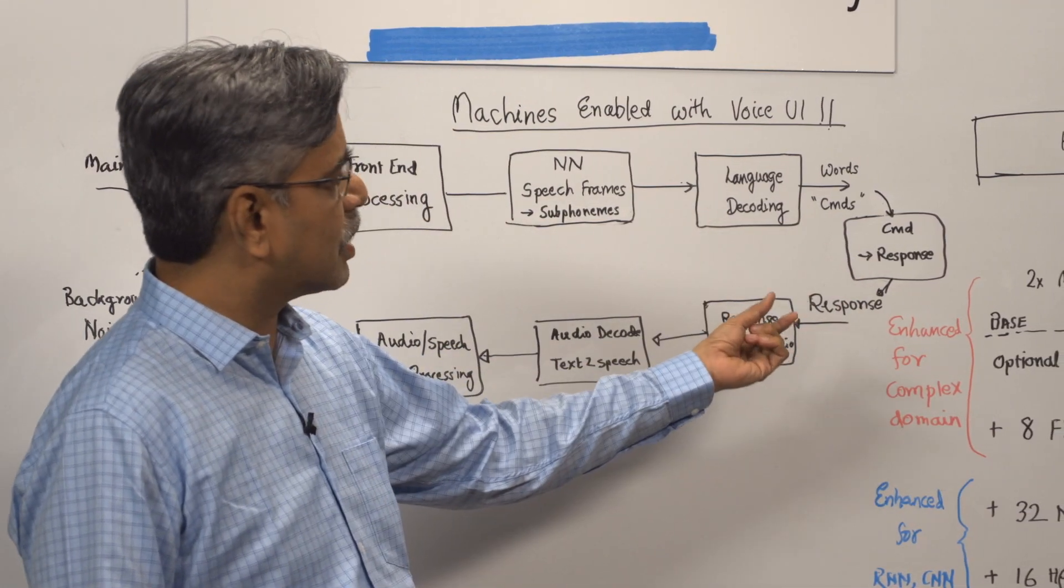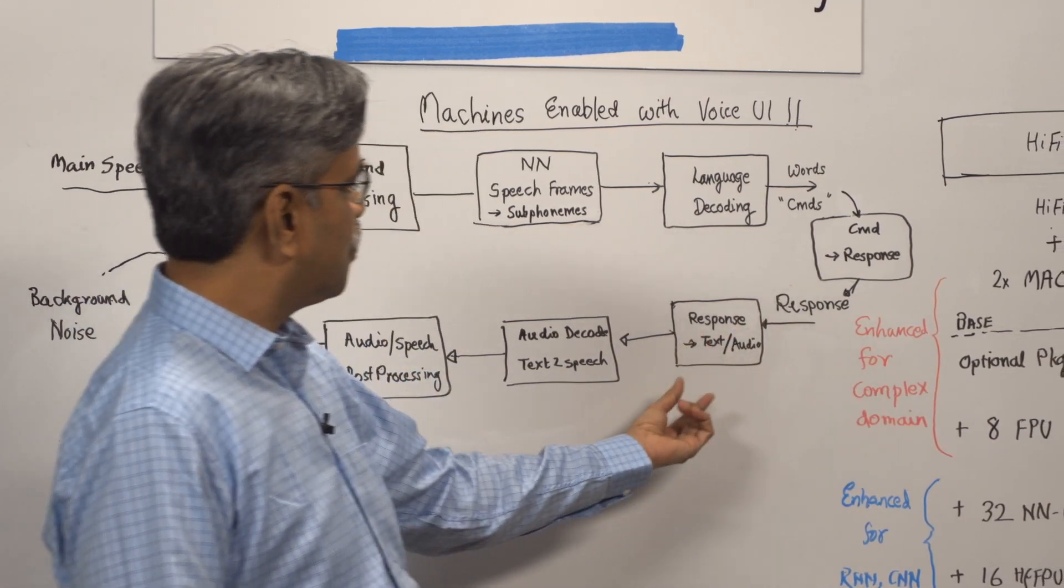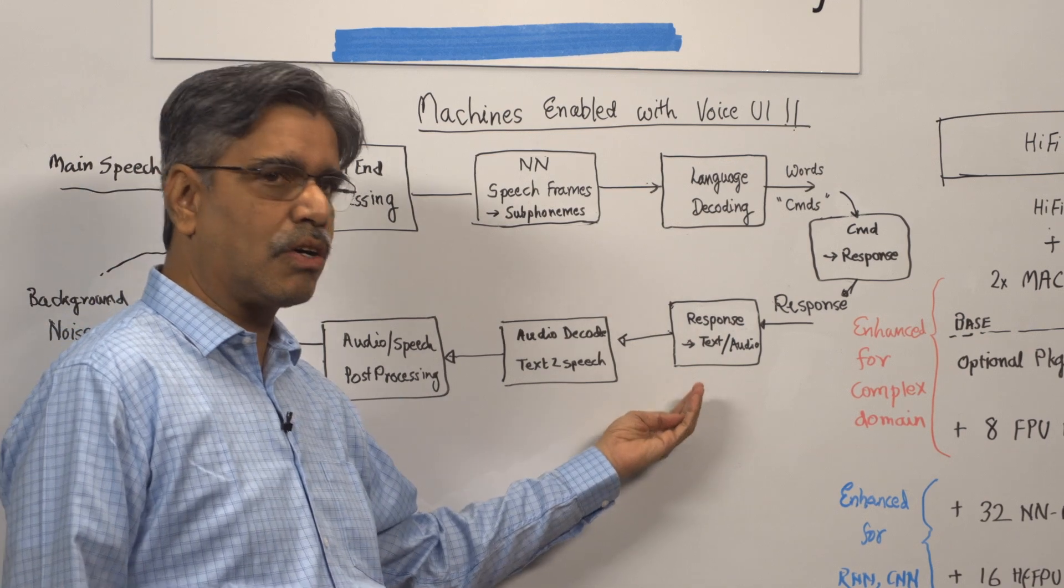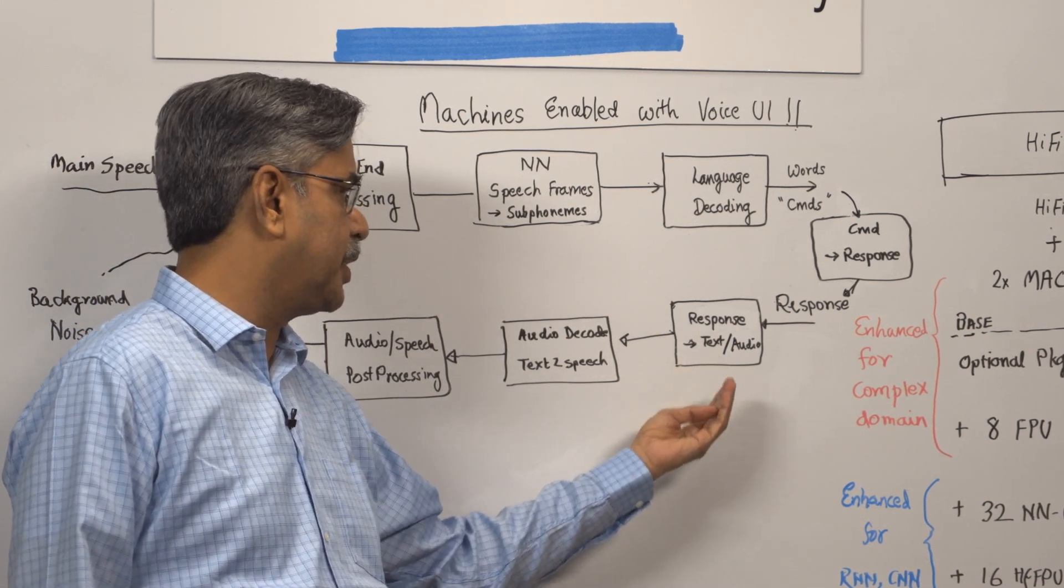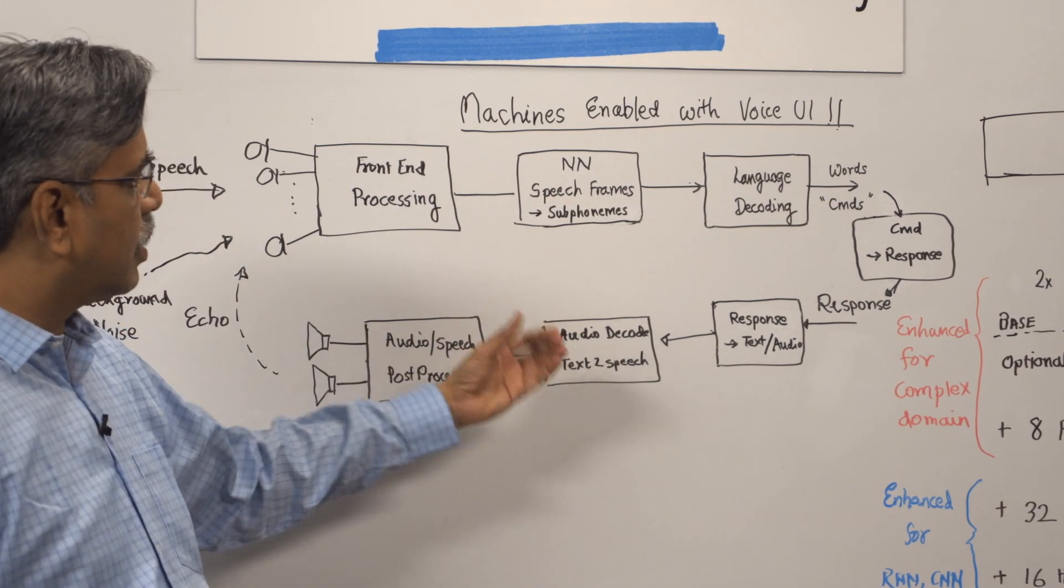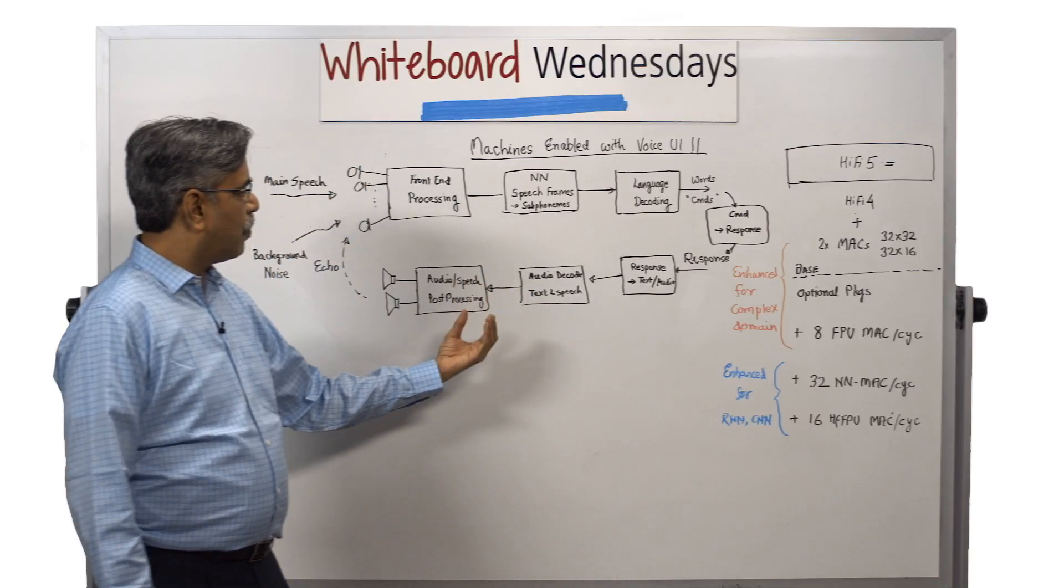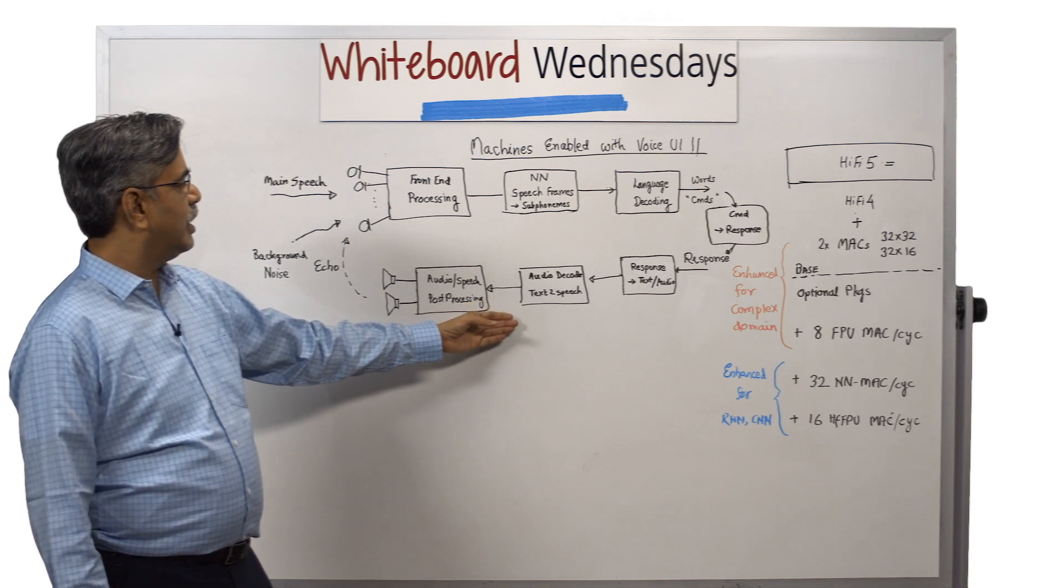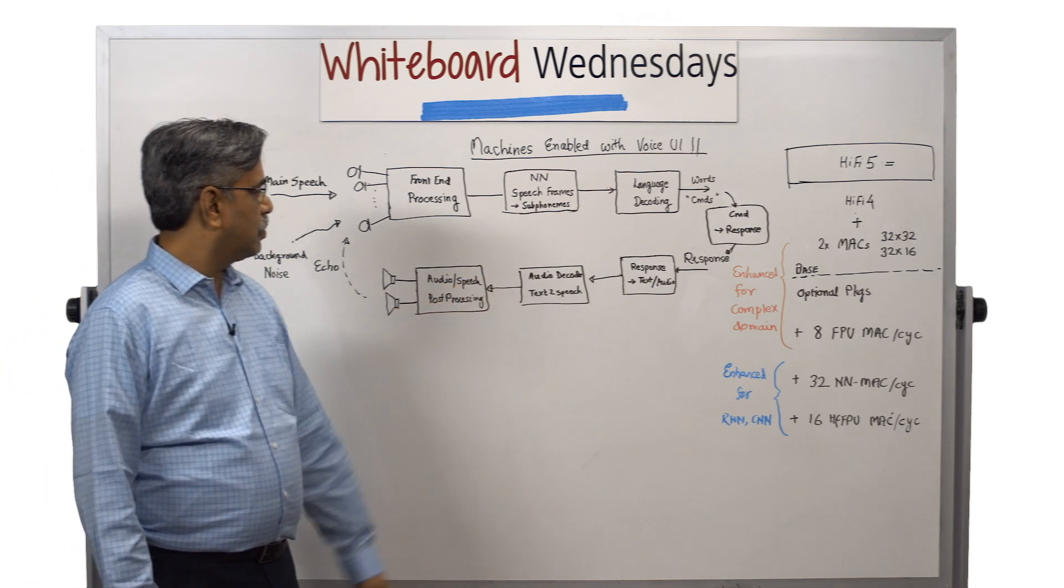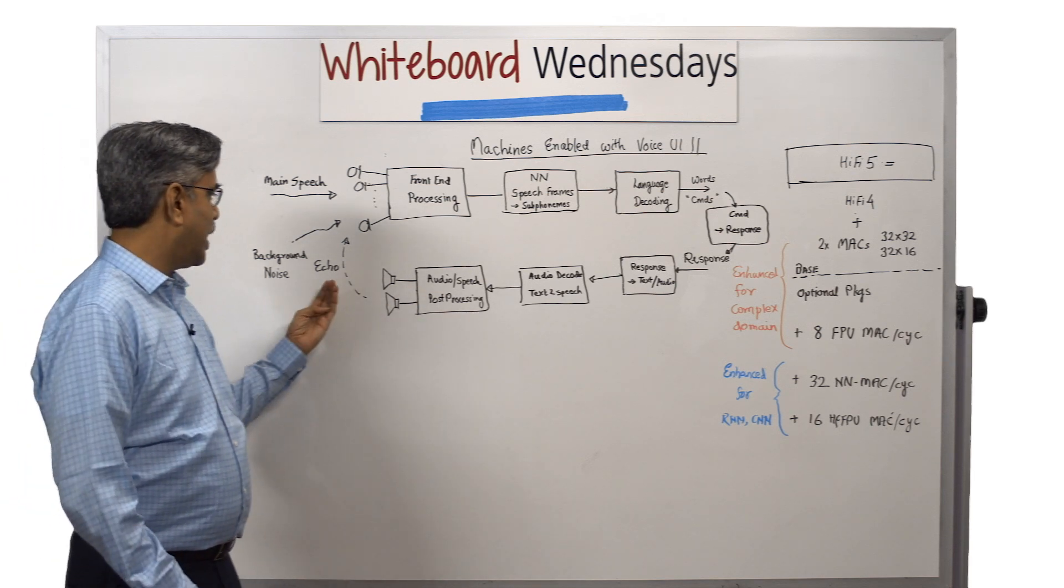The machine will interpret those commands and create a response. That response can be either text or pre-recorded audio speech response. At this end, you will decode that audio or speech response or form text-to-speech converter and then pass it through the audio and speech post-processing unit and play it back.